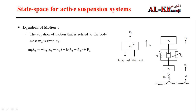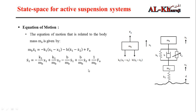Newton's second law states that the summation of forces equals mass times acceleration. Assuming upward forces are positive and downward forces are negative, we get the equation: m_b * x1_double_dot = -k*(x1 - x2) - b*(x1_dot - x2_dot) + F_actuator. For the purpose of developing the state space model, we need x-double-dot isolated on one side with all remaining terms on the other side.